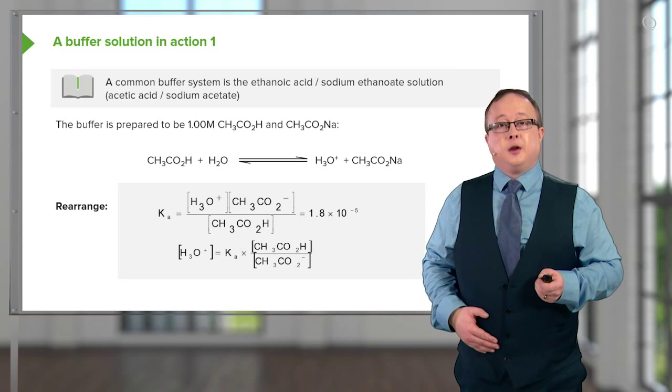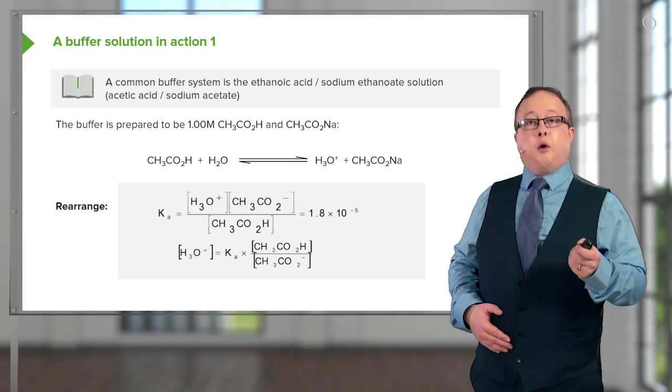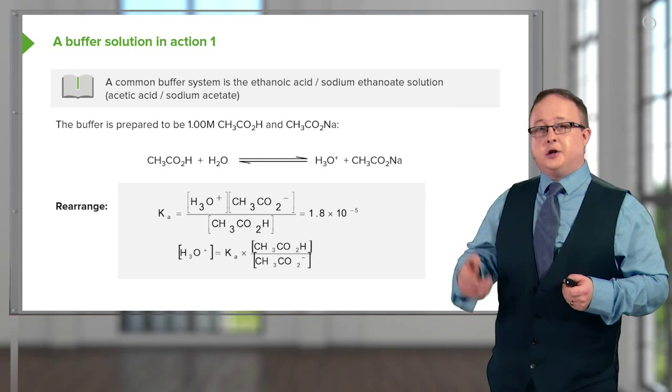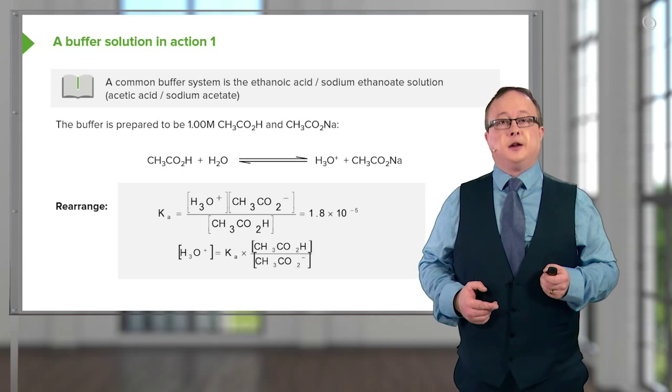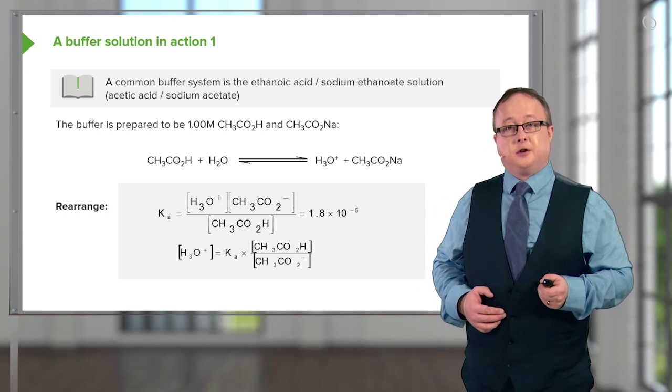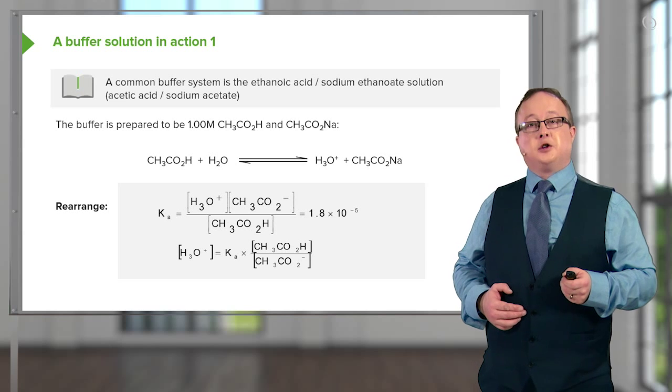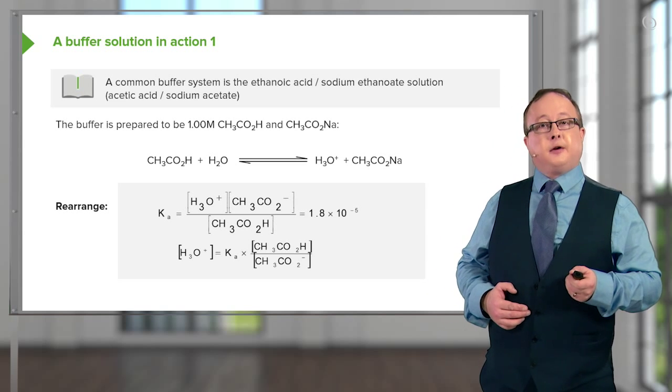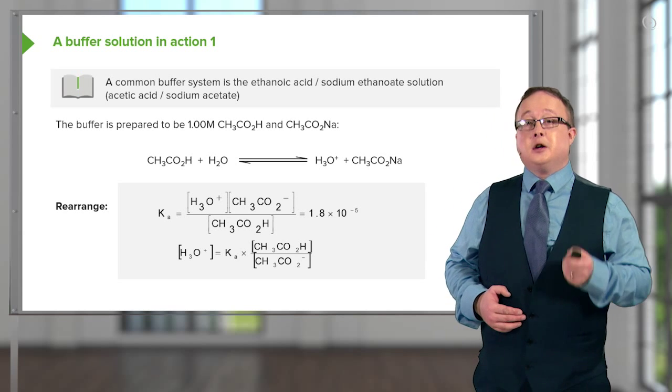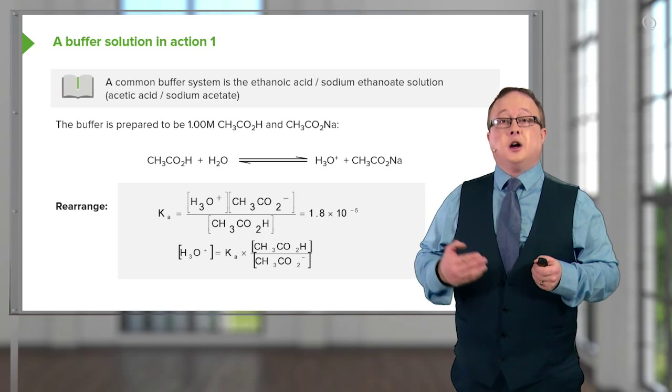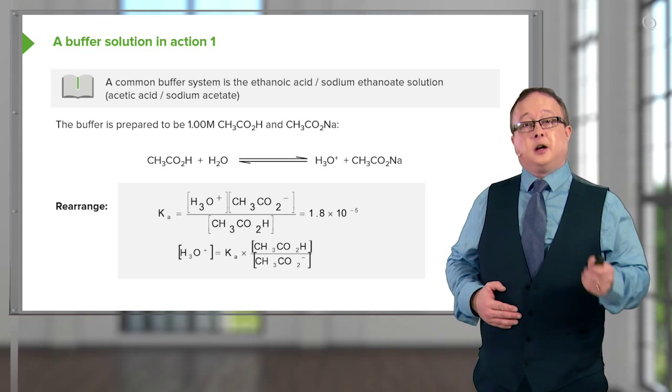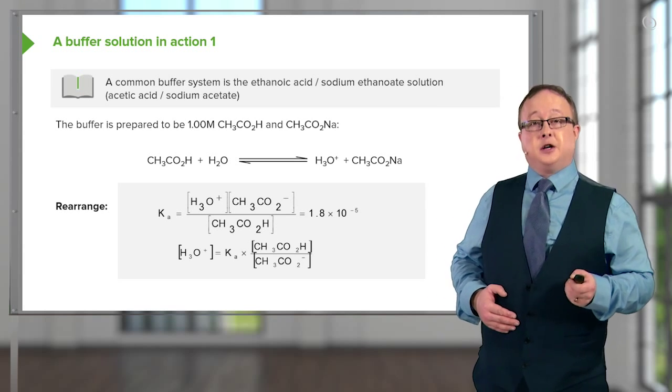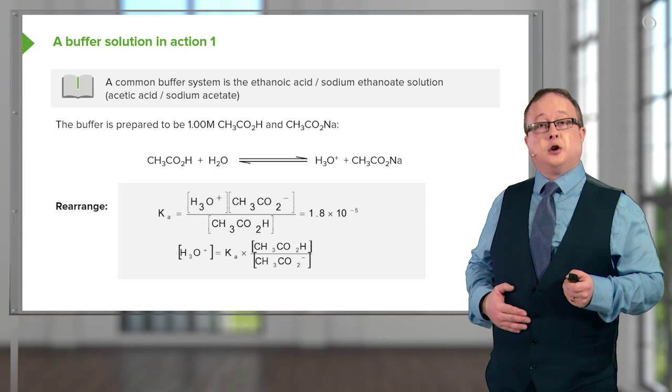The Ka as we said before for acetic acid is 1.8 × 10^-5. If we rearrange this equation to determine the concentration of H+ in our solution, we get the equation shown at the bottom where Ka multiplied by the concentration of acetic acid divided by the concentration of sodium acetate results in a calculation for the concentration of H+ in the form of the hydronium ion.